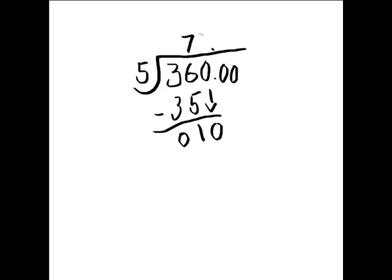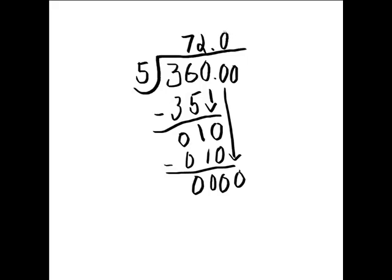Bring down the 0. 5 can go into 10 twice. 5 times 2 equals 10. And then you subtract. 0 minus 0 equals 0. 1 minus 1 equals 0. And 0 minus 0 equals 0. And 5 can't go into 0. So you have to bring down the 0. 5 still can't go into 0. So you have to put a 0 right there to show that.